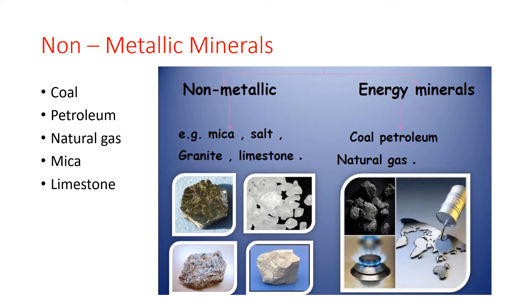Next, Natural Gas. Natural gas is found along with petroleum in some oil wells. It is mainly used as a fuel for domestic and industrial purposes. Natural gas wells have been discovered in Tripura, Mumbai and in the Krishna-Godavari Delta.